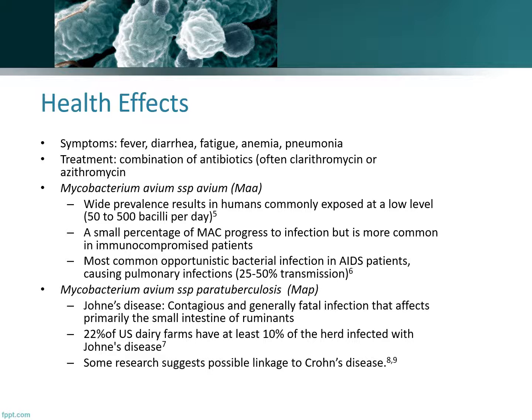Thanks for having me, Cathy. While environmental mycobacteria are opportunistic pathogens in a variety of immunocompromised patients, a wide prevalence results in all humans being commonly and continuously exposed at a low level. Only a very small percentage of human-mycobacteria interactions progress to outright mycobacterial infection, but it's much more common in immunocompromised patients, especially those with AIDS. The CDC estimates that non-tuberculous mycobacteria diseases — those that are non-AIDS related — occur in 1.8 out of 100,000 individuals per year in the US, of which approximately 72% are attributable to the M. avium complex, or MAC.